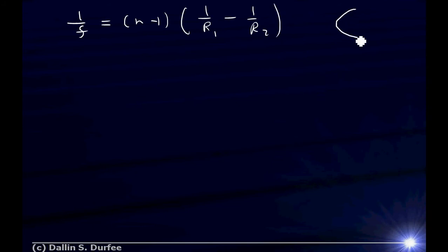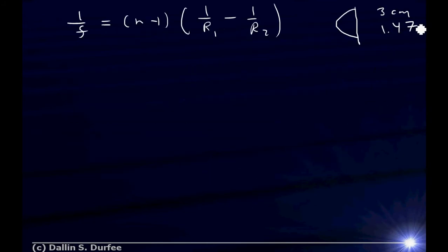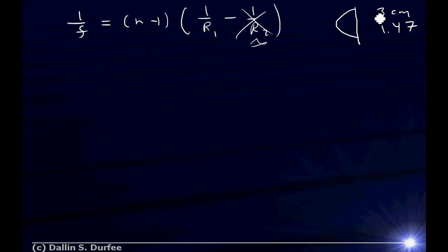Looking at our ball, R1 is our curved surface at 3 centimeters. R2 is the flat side, which is infinity, and 1 over infinity is 0, so we throw that away. Now is R1 positive or negative? Remember, convex surfaces tend to focus light, and since there's a plus sign in front of R1 in the equation, it must be positive 3 centimeters.